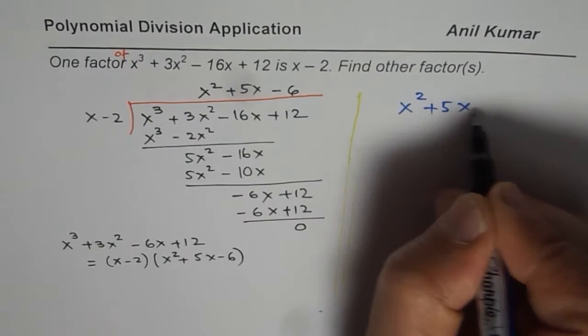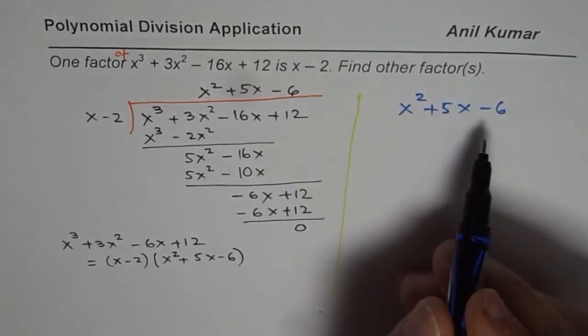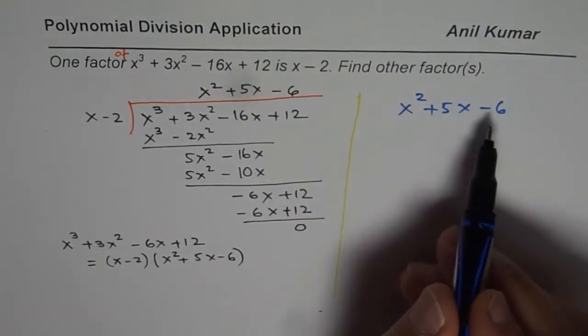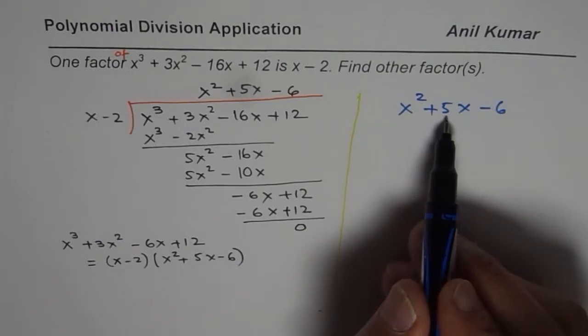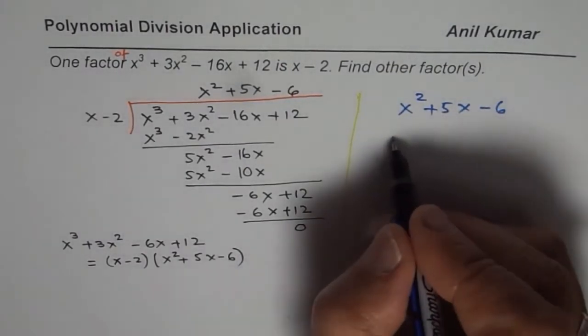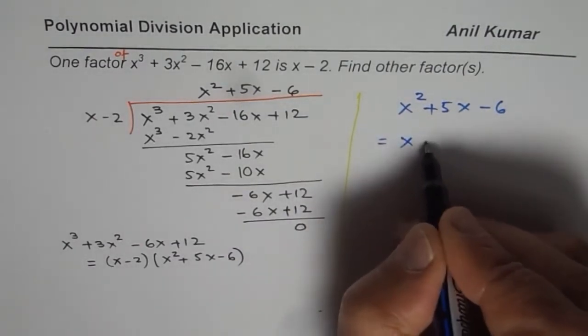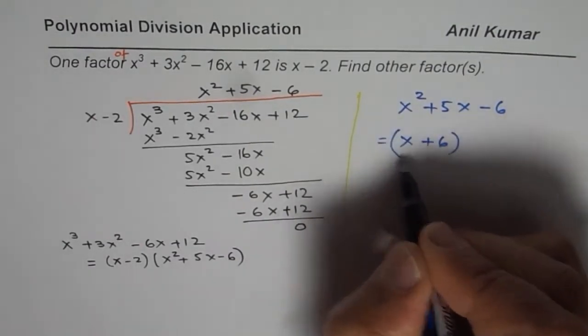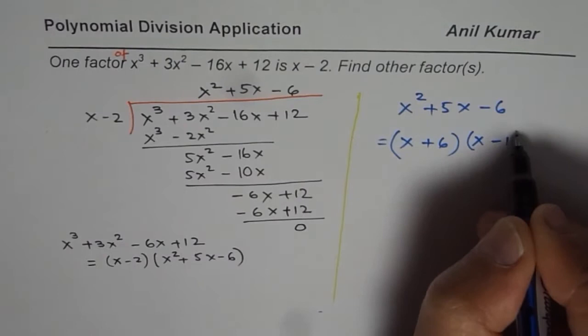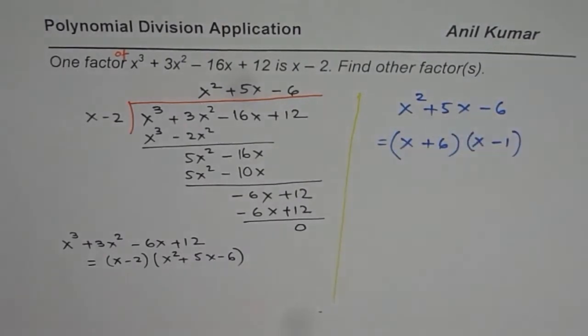x² + 5x - 6. We are looking for two numbers whose product is -6 and sum is +5. So it is 6 and 1, 6 positive. So we could write this as x + 6 times x - 1. So that is how we could factor this.